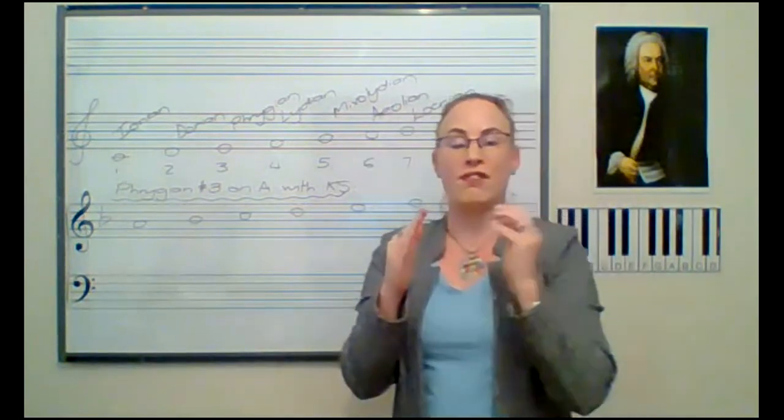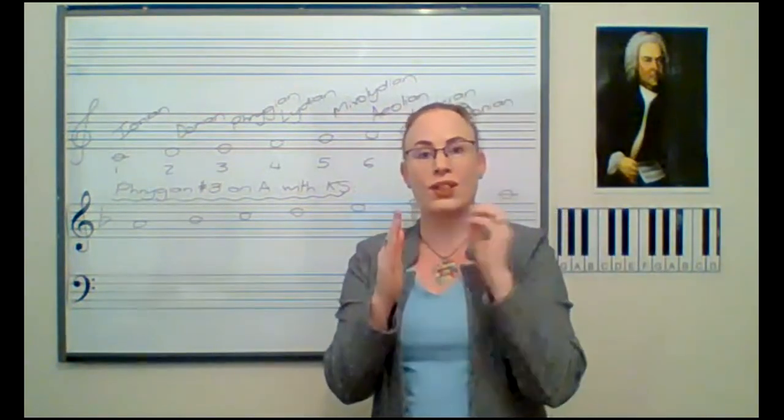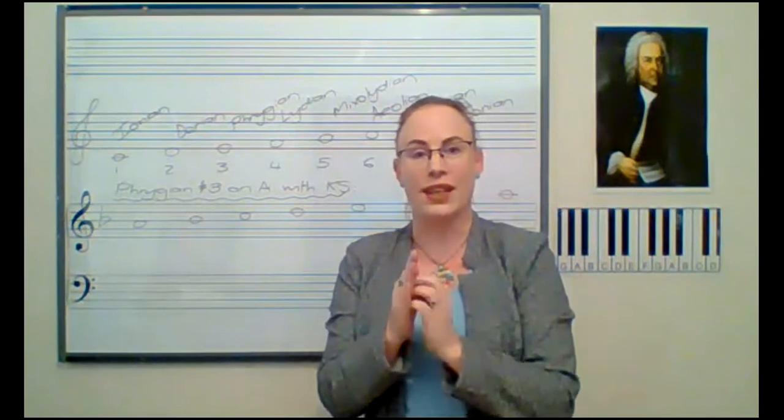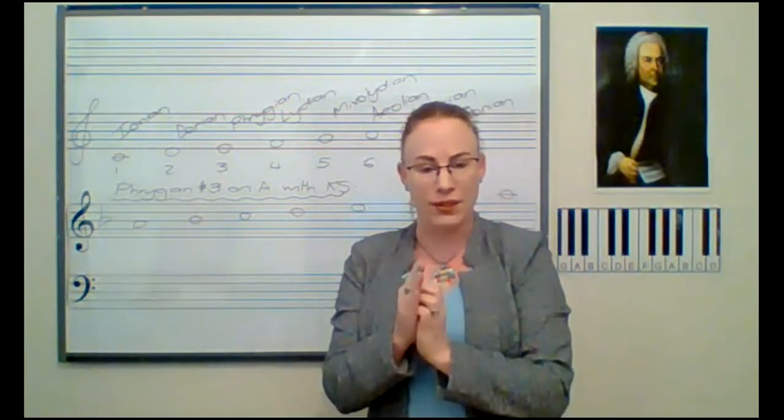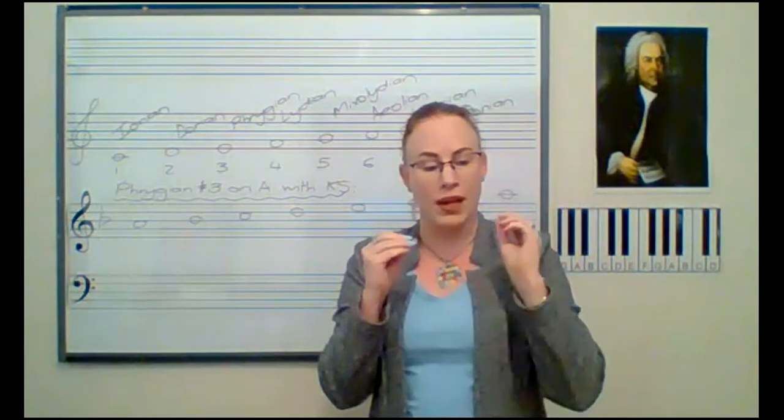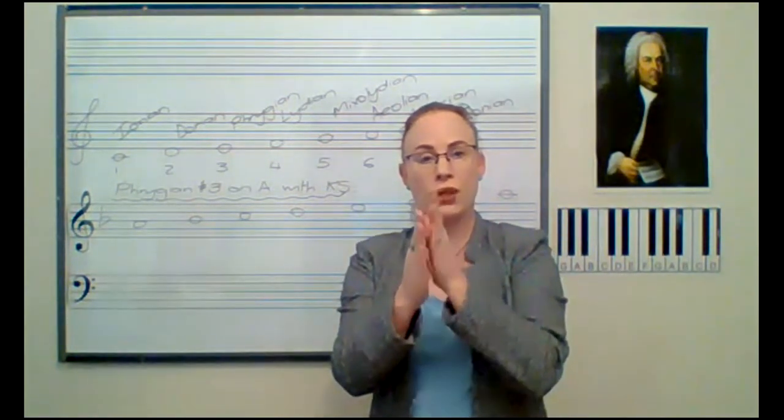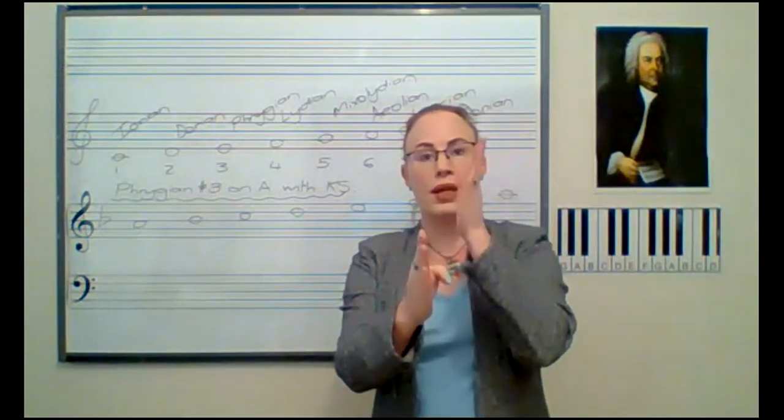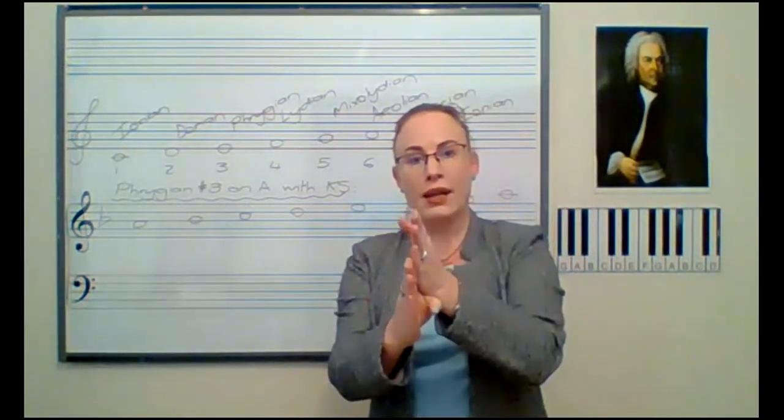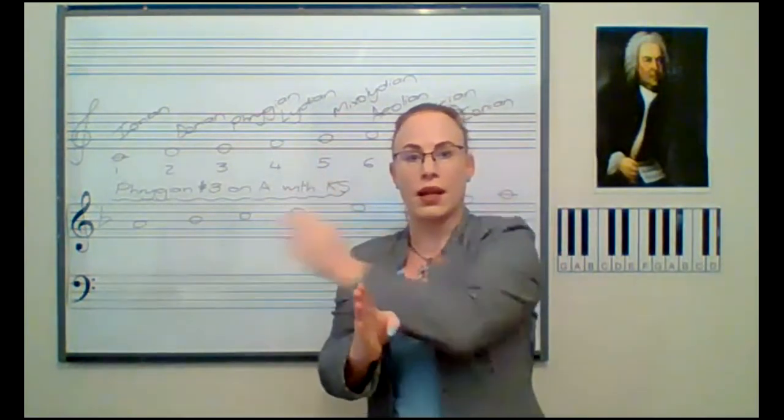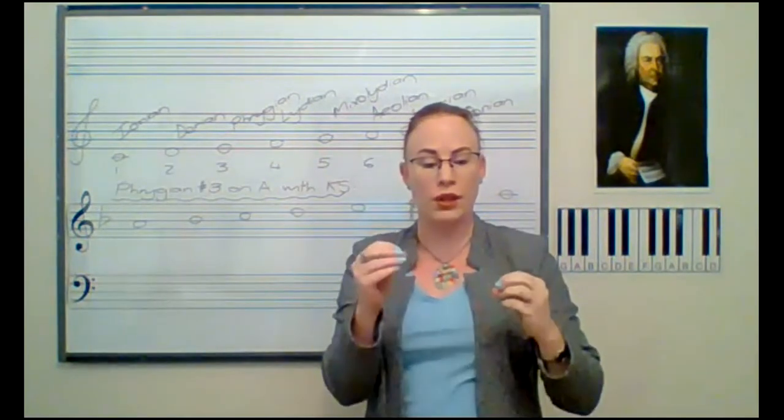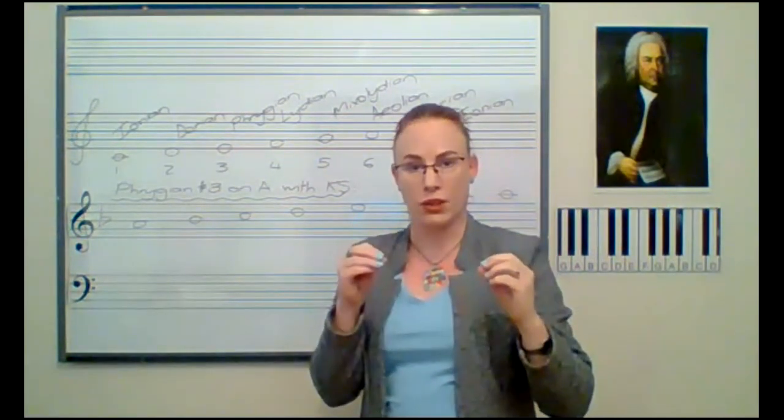So first of all, the Phrygian mode starts on the third scale degree of your major. So I know that my A, all I need to do is I just need to count back. So it's going to be A, G, and F. So I am going to work with F major.